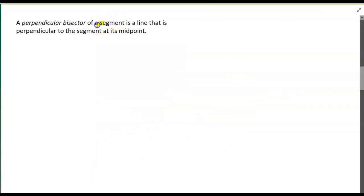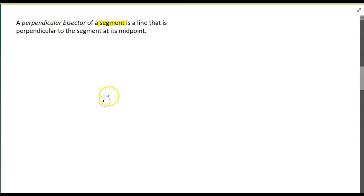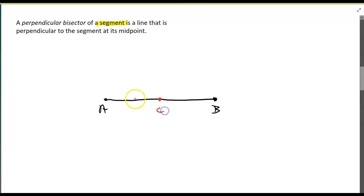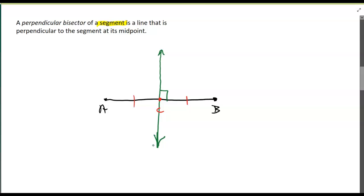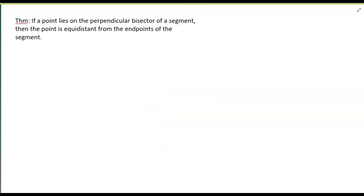A perpendicular bisector of a segment is a line that is perpendicular to the segment at its midpoint. So let's start with a segment — I'll call this segment AB, and I'll make point C the midpoint. The perpendicular bisector is the line that goes through that midpoint and forms a right angle with the segment. It's called a perpendicular bisector because it's perpendicular and it also bisects the segment.